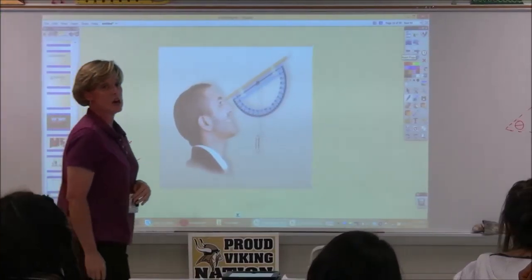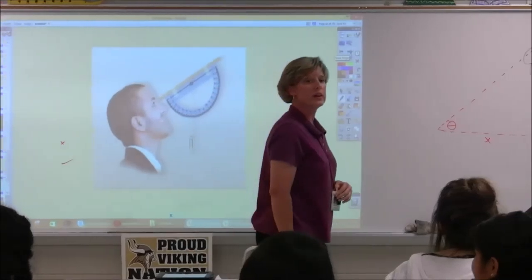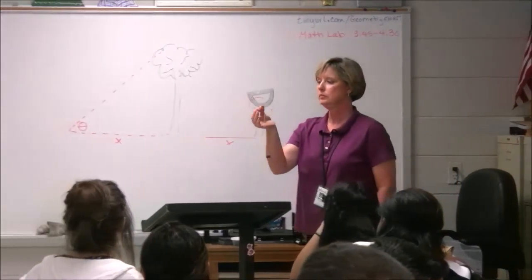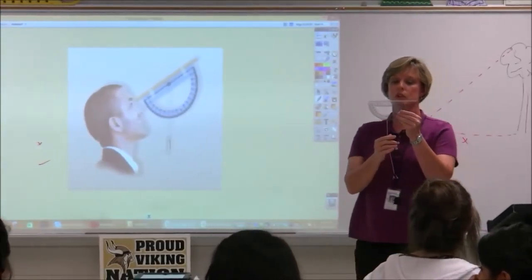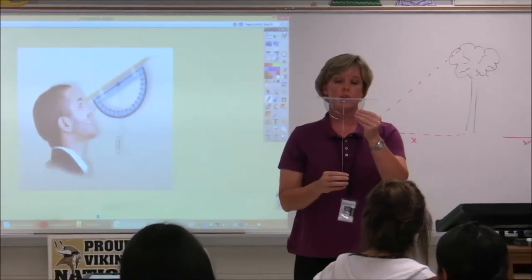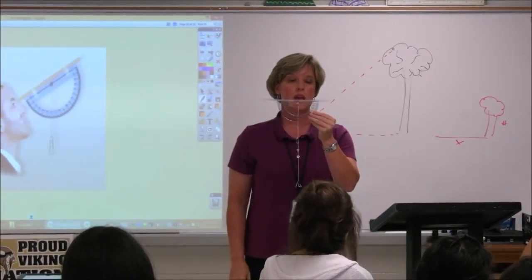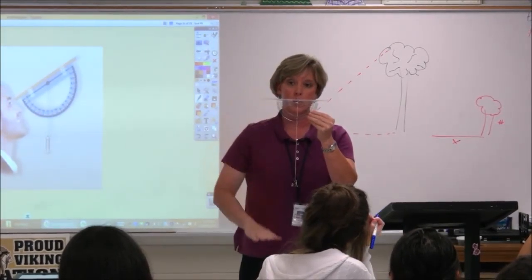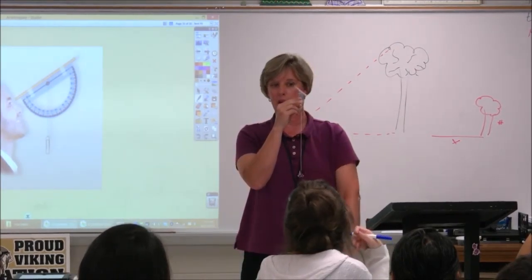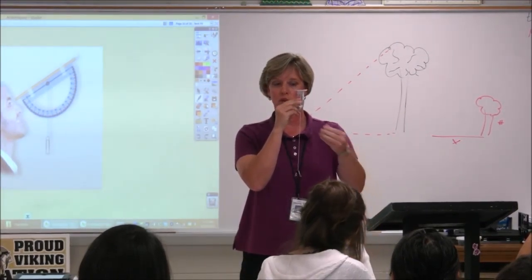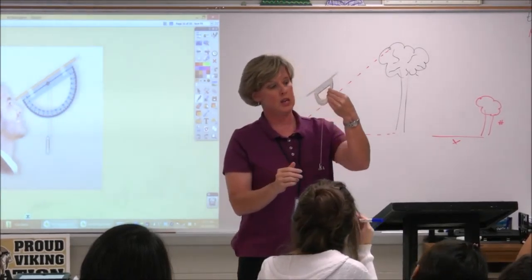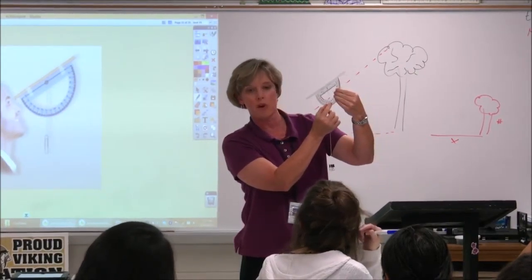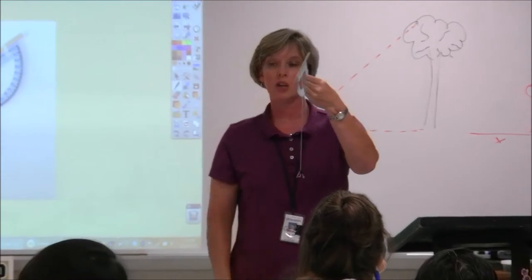This is called a clinometer, and it's very high tech. We've got a weight tied on the end of a string hanging at 90 degrees. The straw up here is parallel to the ground. If I turn it and look in the end of that straw, what's happening to the string? It's moving. So if I want to know the angle of elevation, I'm going to see how far the string moves from 90 degrees. That's how you're going to measure.